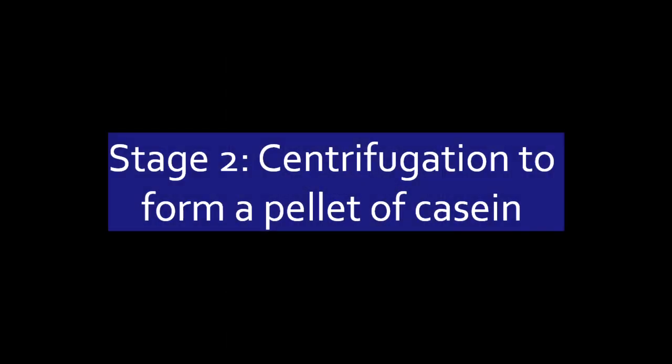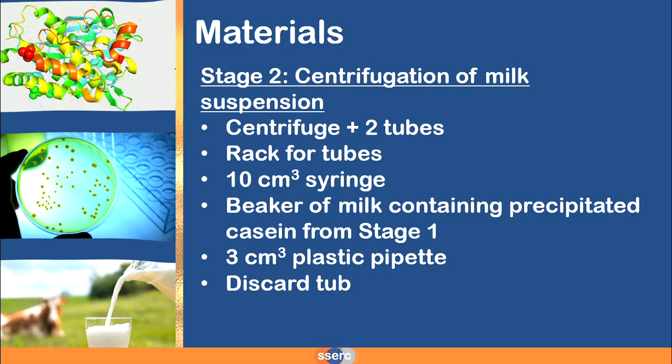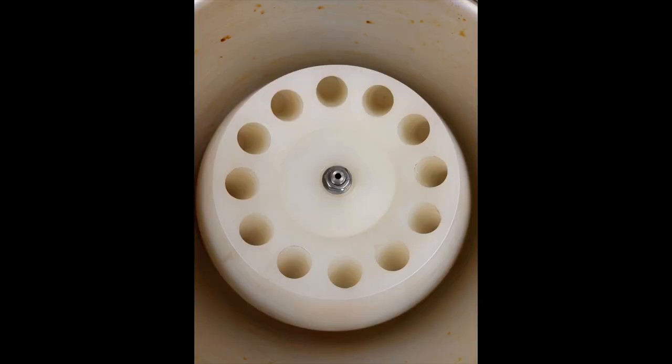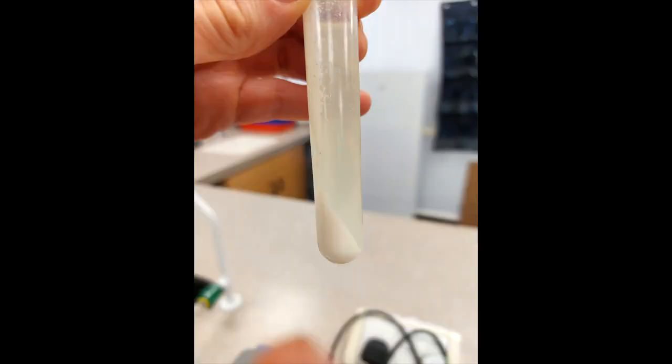So now we've got to get that protein out of the milk suspension and we do that by centrifugation. You're now going to split that suspension of milk between two centrifuge tubes, put them into centrifuge rotor balanced, and then we're going to spin that for five minutes at 6,000 rpm until we see this pellet of casein.